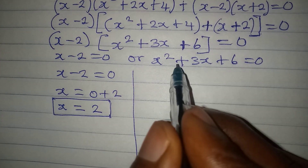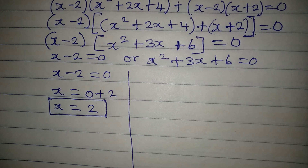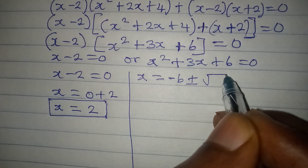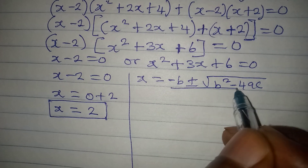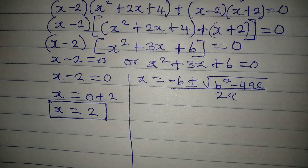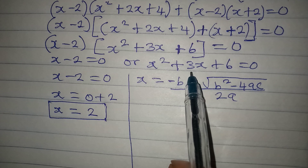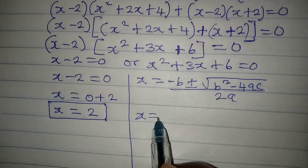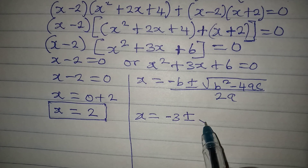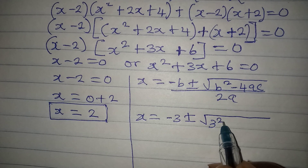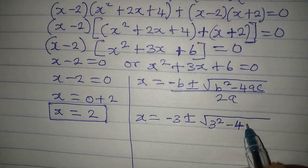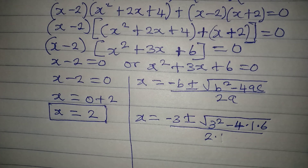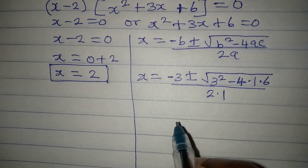Now let's solve x squared plus 3x plus 6 equals zero — this is a quadratic equation, so we use the quadratic formula: x equals minus b plus or minus square root of (b squared minus 4ac), all over 2a. Here a is the coefficient of x squared, b is the coefficient of x, and c is the constant. So a equals 1, b equals 3, c equals 6. Substituting: x equals minus 3 plus or minus square root of (3 squared minus 4 times 1 times 6), all over 2 times 1.